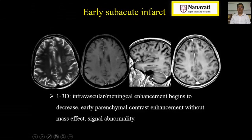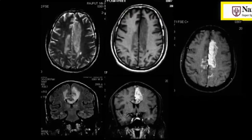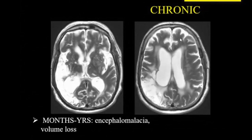As infarct moves from acute to early subacute stage — day 1 to 3 — you will get intravascular enhancement that initially increases then begins to decrease, and early parenchymal enhancement without mass effect. In the late subacute stage — day 4 to 7 — the wedge-shaped T2 hyperintensity becomes hypointense on T1, and you get intense heterogeneous enhancement which can at times simulate tumors or infections, so you should be careful about the history. In the chronic stage — from a few months to years — you start getting encephalomalacic changes, volume loss, ex-vacuo dilatation of adjacent ventricles and sulci, and Wallerian degeneration of the pyramidal tract.